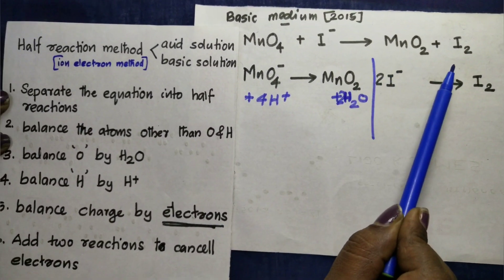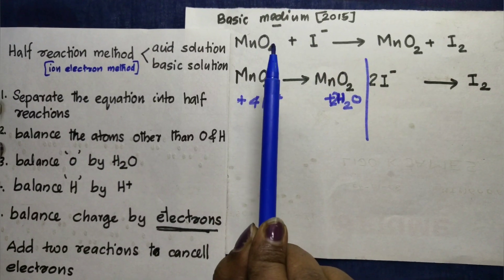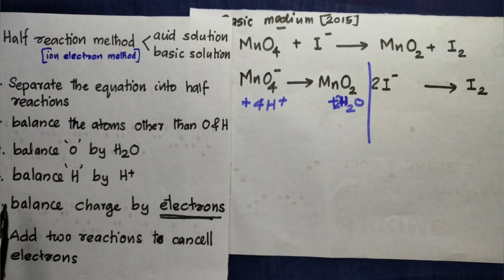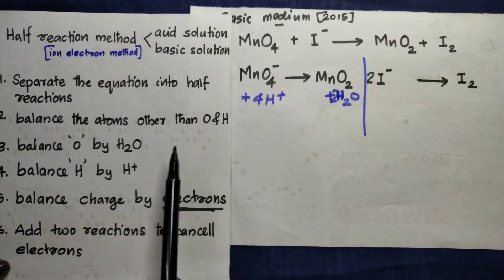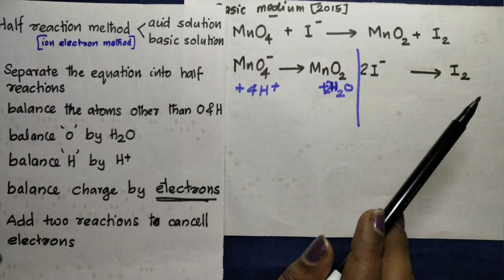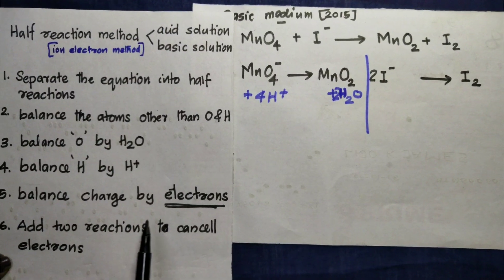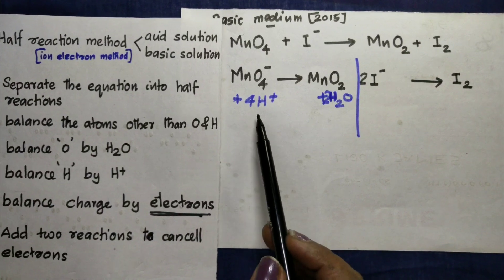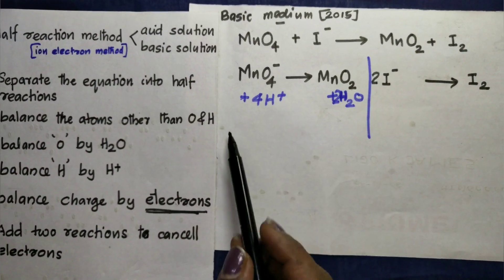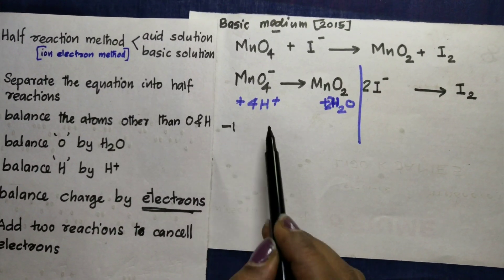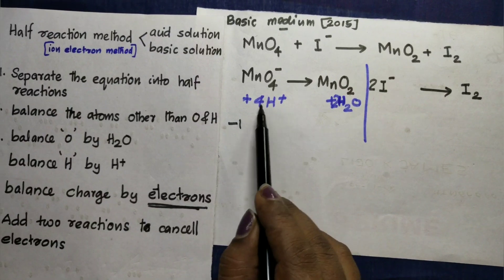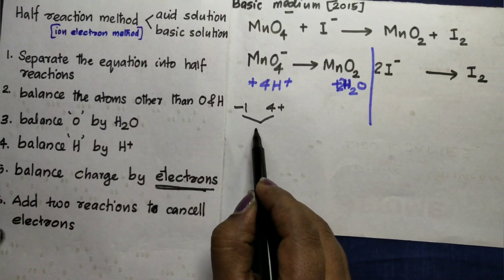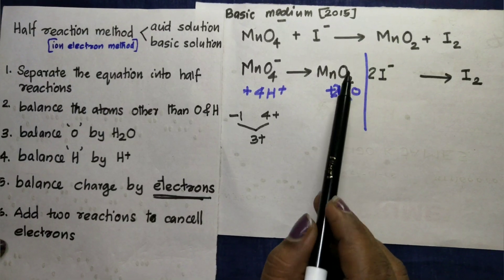We need to add 2 atoms and balance the charge. We need to add balance by electrons. We need to add 1 minus charge. Here plus 4, and this charge is 3 positive charge here.